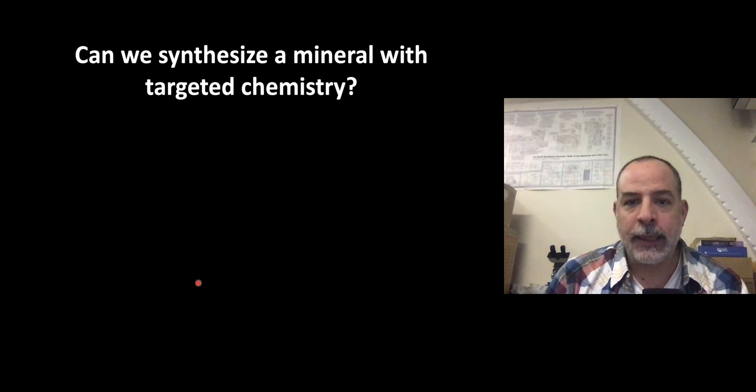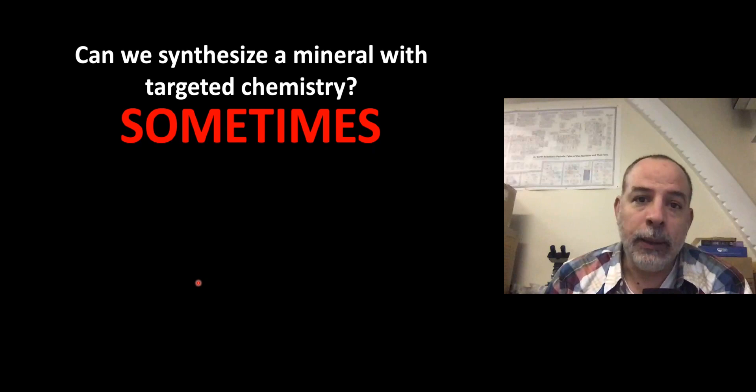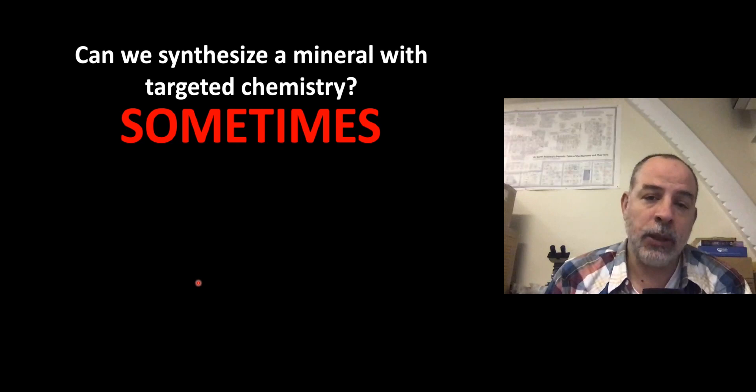Can we synthesize a mineral with a targeted chemistry? Sometimes we can. For example, if you want to produce pure calcite, pure gypsum, or pure apatite, there is no problem. But if you want to add foreign ions in these minerals with different proportions, then the synthesis can be very complicated, and sometimes we don't even know how to do this.